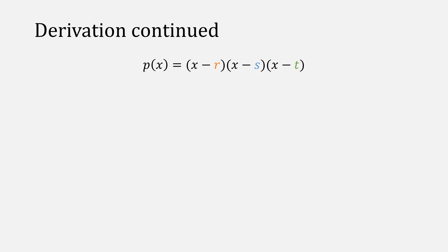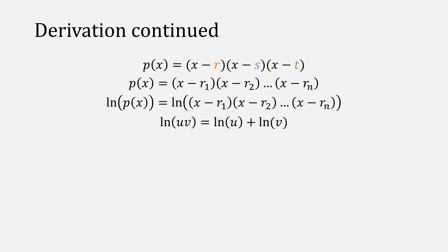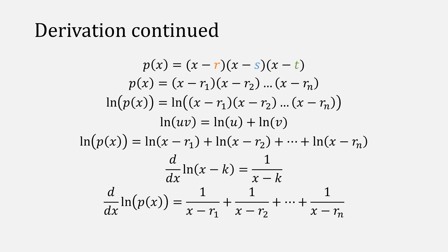Our example p can be written as this expression for a more general polynomial. If we take the natural log of both sides, using properties of logs, we can expand that expression to be this summation. Then, using properties of the derivative of logs, we can come up with this by taking the derivative of both sides. Notice how this is the exact same expression we came up with earlier.